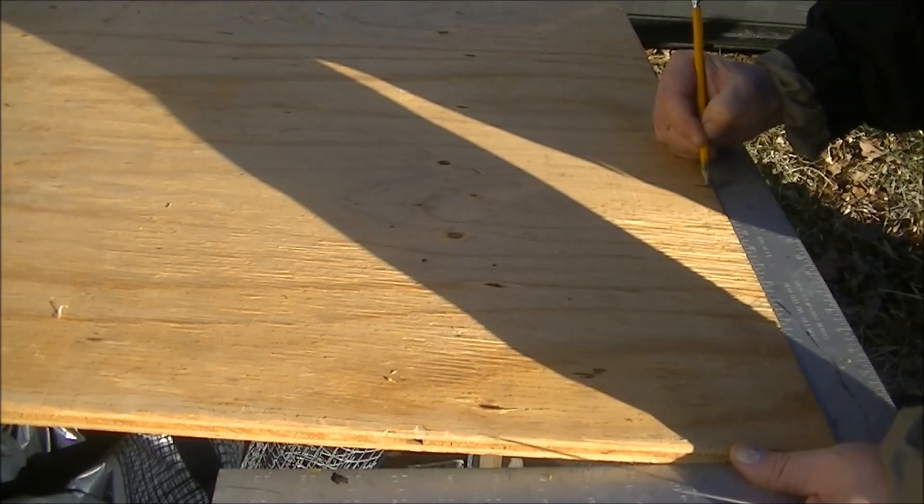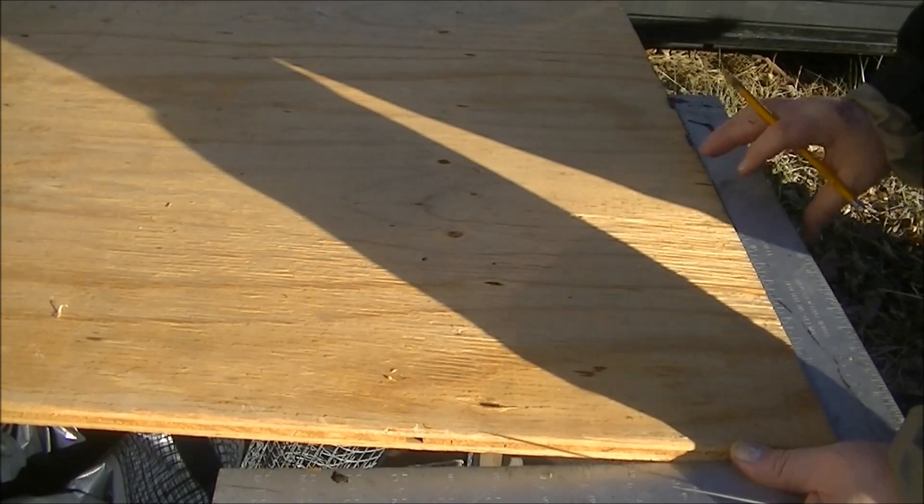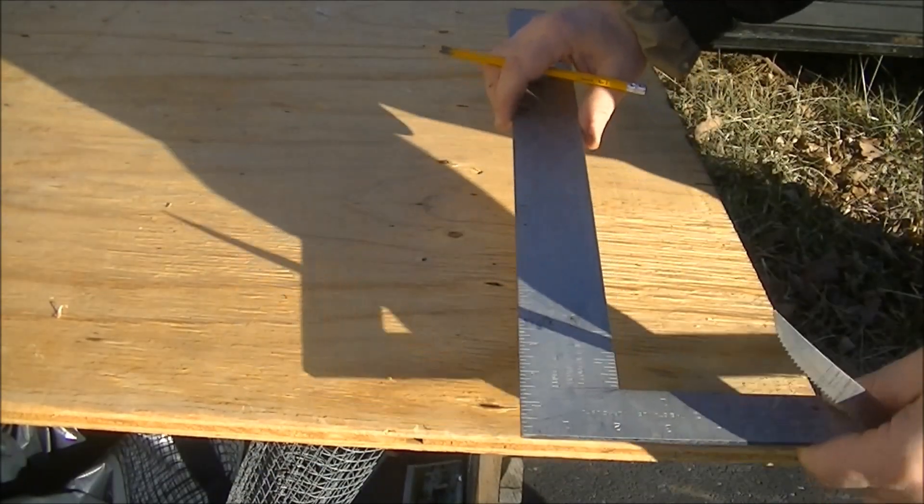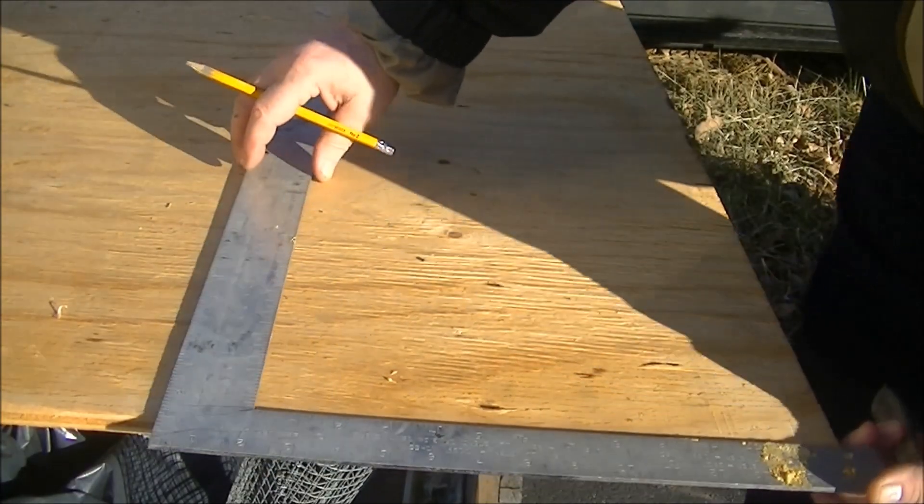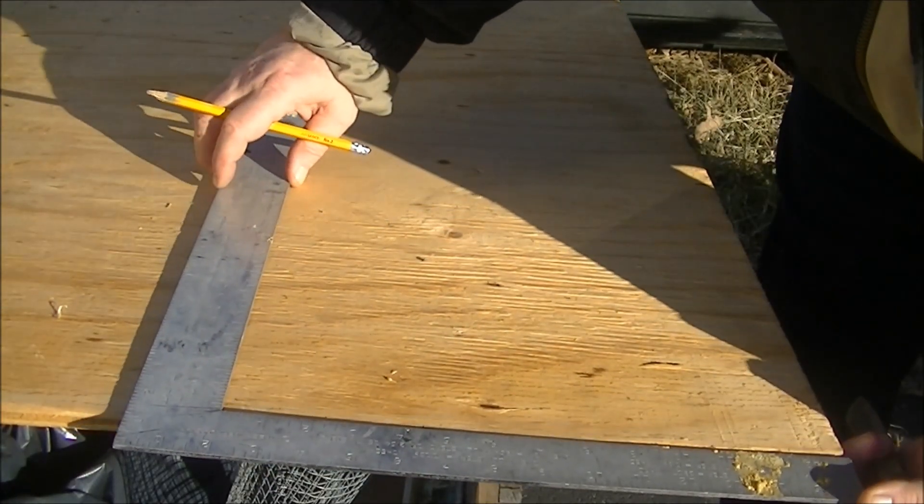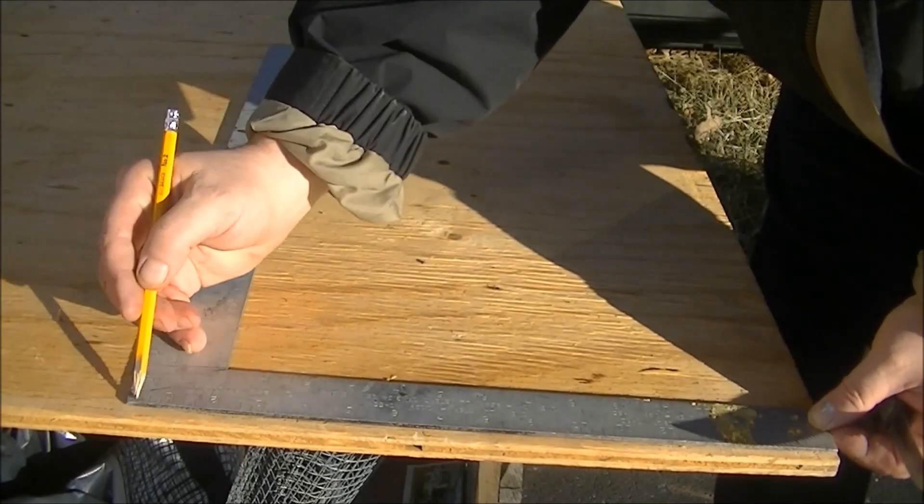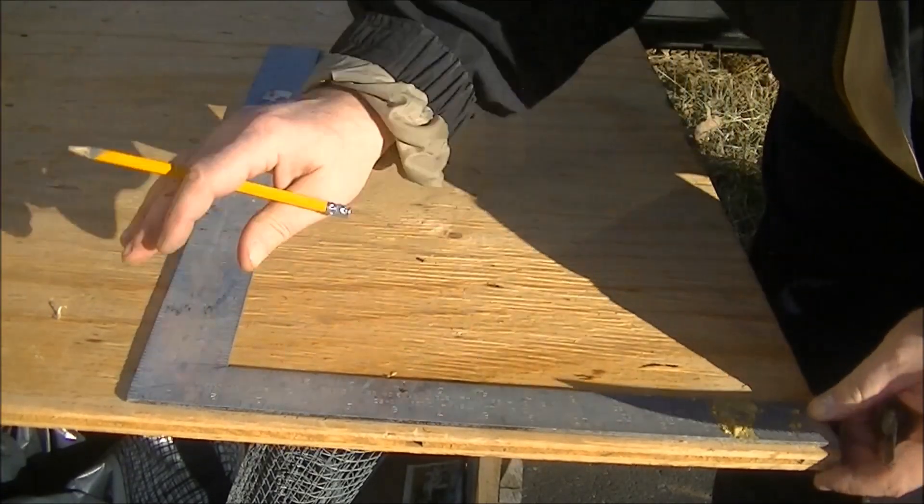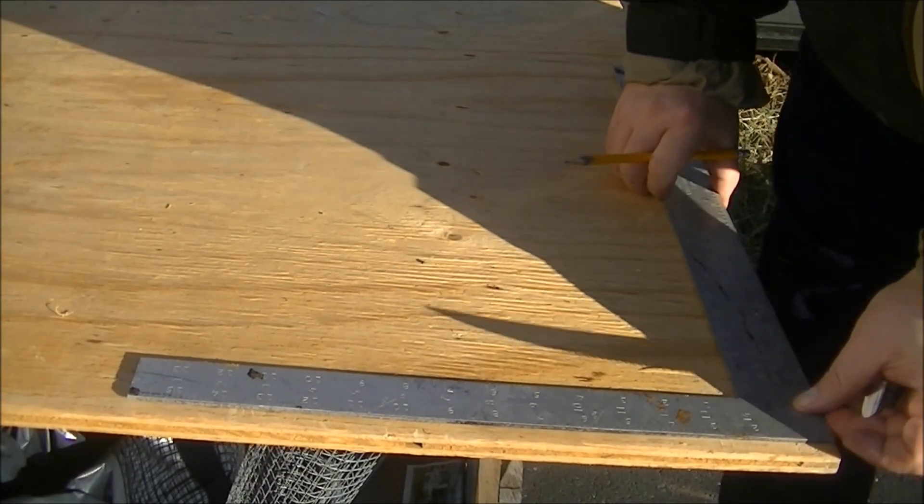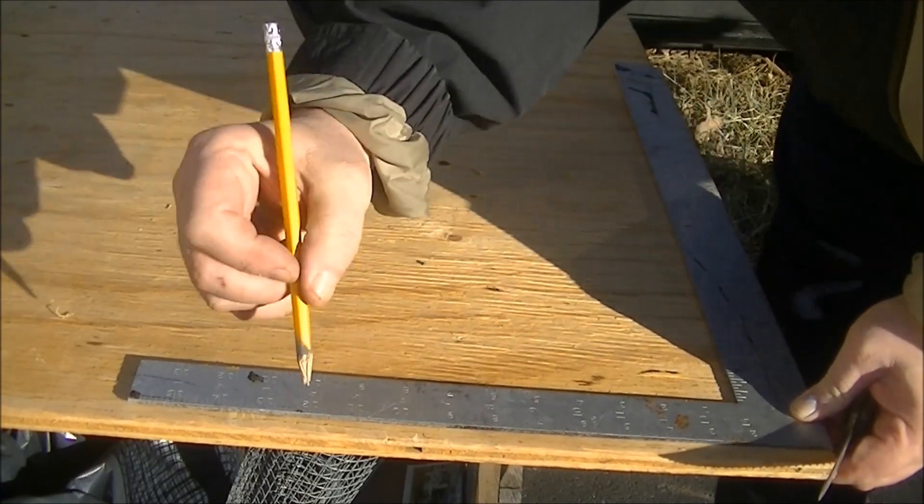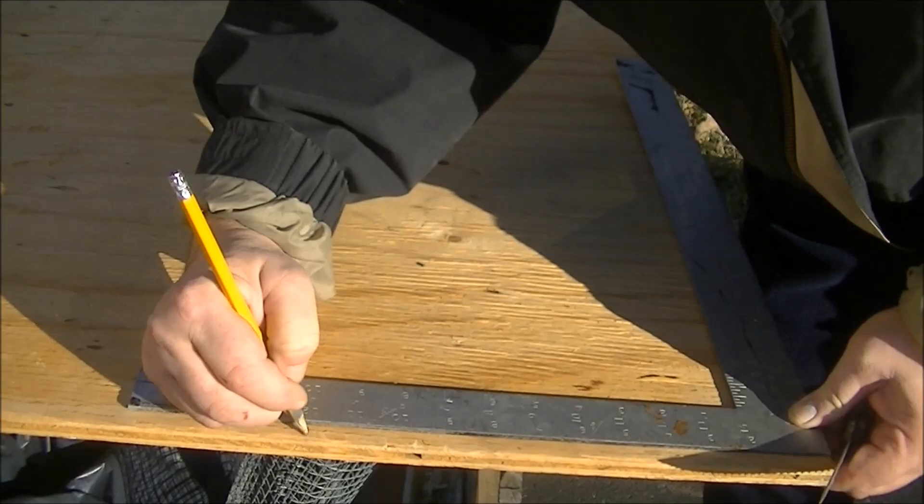Now I want to flip that square over and I want to come over 12 inches from the end. I want to bring it right up to the factory edge and mark right on the 12 on the outside scale.